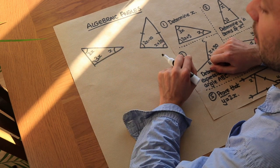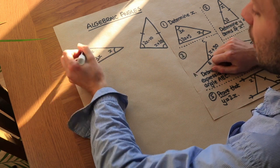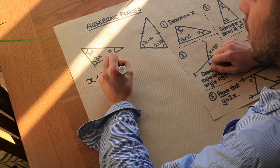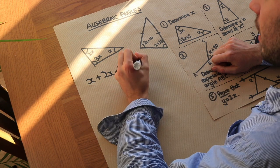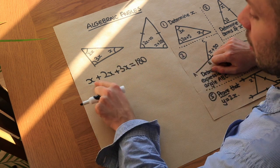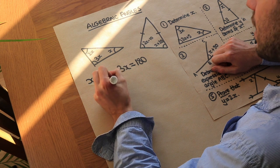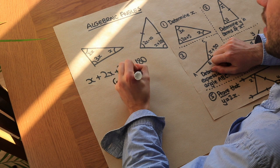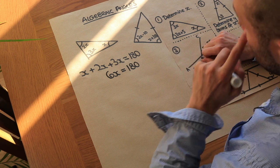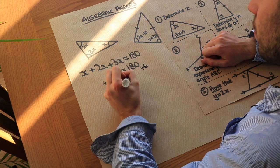What do we know about the angles within a triangle? Well, we know that they add up to 180 degrees. So we add these three angles together: x plus 2x plus 3x equals 180 degrees. We've formed an equation we can solve. Simplifying the left-hand side: 1x plus 2x plus 3x gives 6x. So 6x equals 180 degrees, and dividing both sides by 6 gives us x equals 30 degrees.